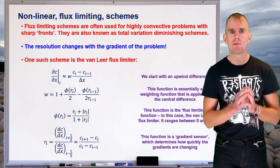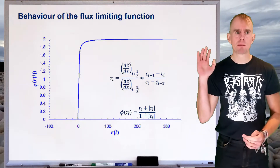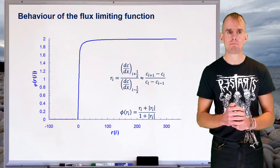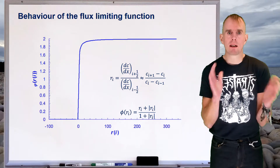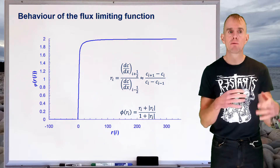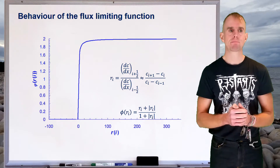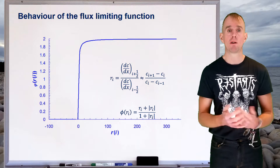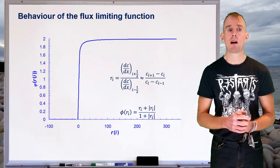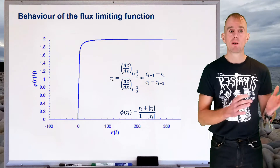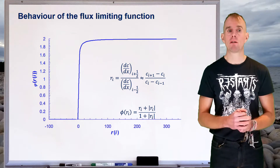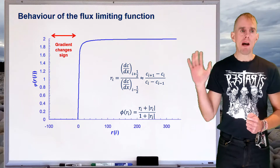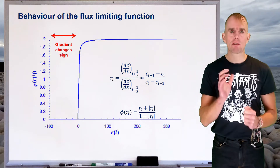Let's now plot what these various functions look like. The plot on the board shows the flux limiting function phi as a function of the gradient sensor r. Remember, r was that ratio of two gradients just either side of the point of interest, and phi was written as a function of r. We can see that phi, the flux limiting function, varies between two limits. At negative r, the flux limiting function equals zero, there's a transition region, and then as r increases phi equals two.